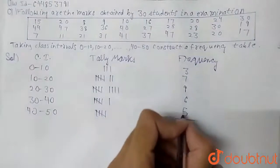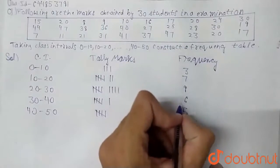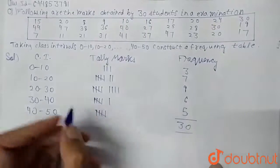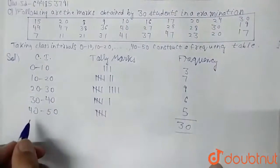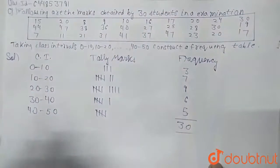So if we write the total, 7 plus 3 is 10, 19 plus 11 is equal to 30. So we can say that this is our frequency distribution table for these values. So this is our required answer. Thank you for watching.